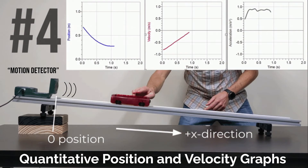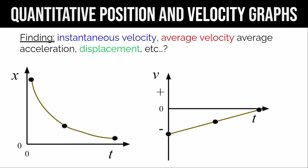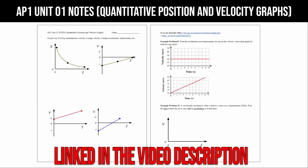In this class we need to start learning how to interpret quantitative position and velocity time graphs. Given the shape of a position versus time graph or a velocity versus time graph, we need to know how to determine instantaneous velocity, average velocity, average acceleration, or displacement from either graph if we have specific numbers. As you watch this video, fill out your AP1 Unit 1 notes related to quantitative position and velocity graphs.